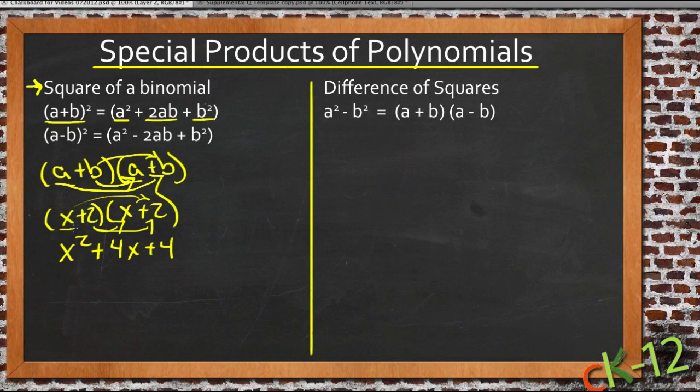x² is our first term squared. 2 times x times 2, so 2 times x is 2x, times 2 is 4x, and then finally the second term, 2 squared, which is 4. And the same pattern holds true if you have minus in the middle, it just ends up being the middle term is negative instead of positive.